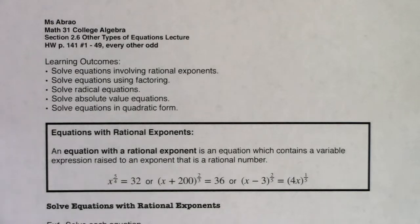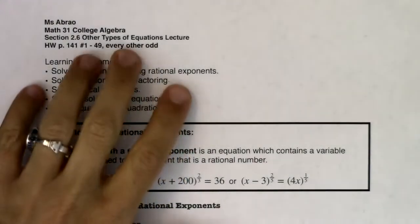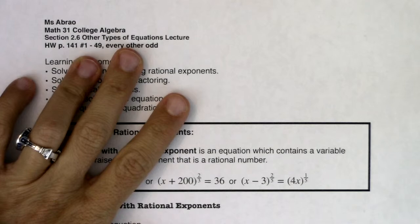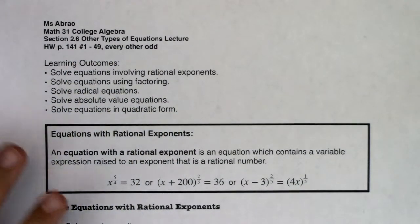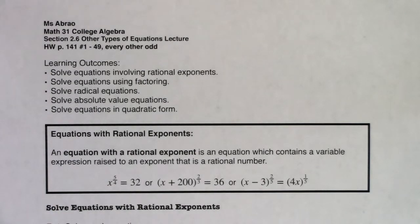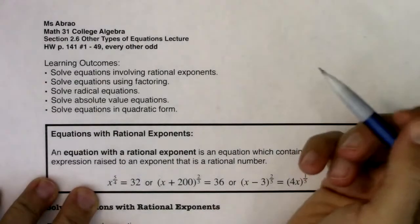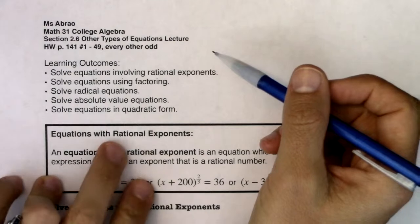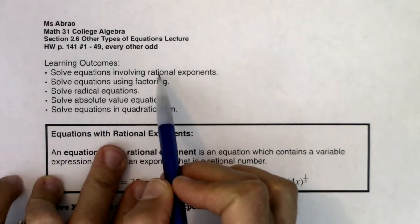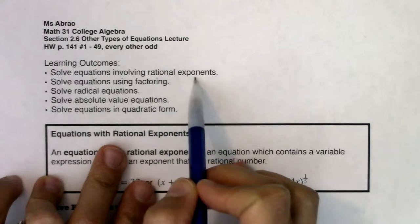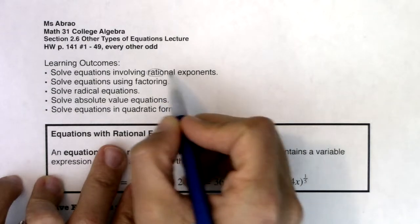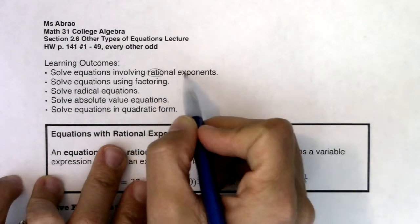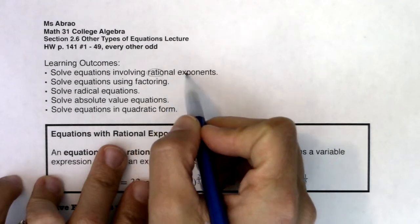Hey Math 31, let's get going on section 2.6. Section 2.6 has this general title: Other Types of Equations. So far in this class, we've reviewed linear equations and quadratic equations. This section kind of blows the roof off of that and looks at a whole bunch of other equations. The other types we'll be looking at include equations involving rational exponents — where the exponent on the power is a fraction, so fractional exponents.